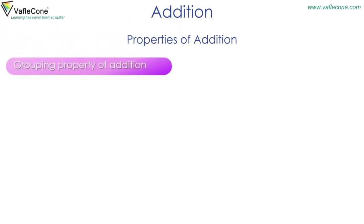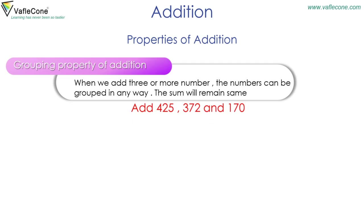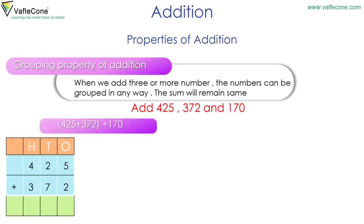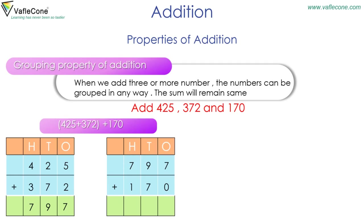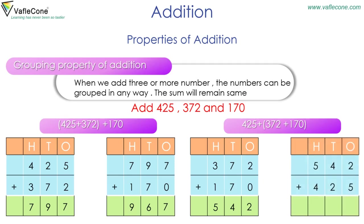Grouping property of addition: when we add three or more numbers, they can be grouped in any way and the sum will remain the same. Add 425, 372, and 170. Grouping 425 and 372 gives 797. Adding 797 to 170 gives 967. Further, regrouping 372 and 170 gives 542. And adding 425 and 542 also gives 967.